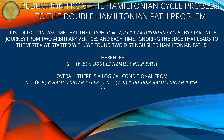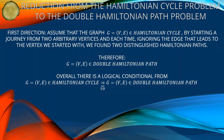By starting a journey from two arbitrary vertices and each time ignoring the edge that leads to the vertex we started with, we find two distinguished Hamiltonian paths. Therefore G = (V, E) is in double Hamiltonian path. Overall there is a logical conditional from G = (V, E) in Hamiltonian cycle to G = (V, E) in double Hamiltonian path.